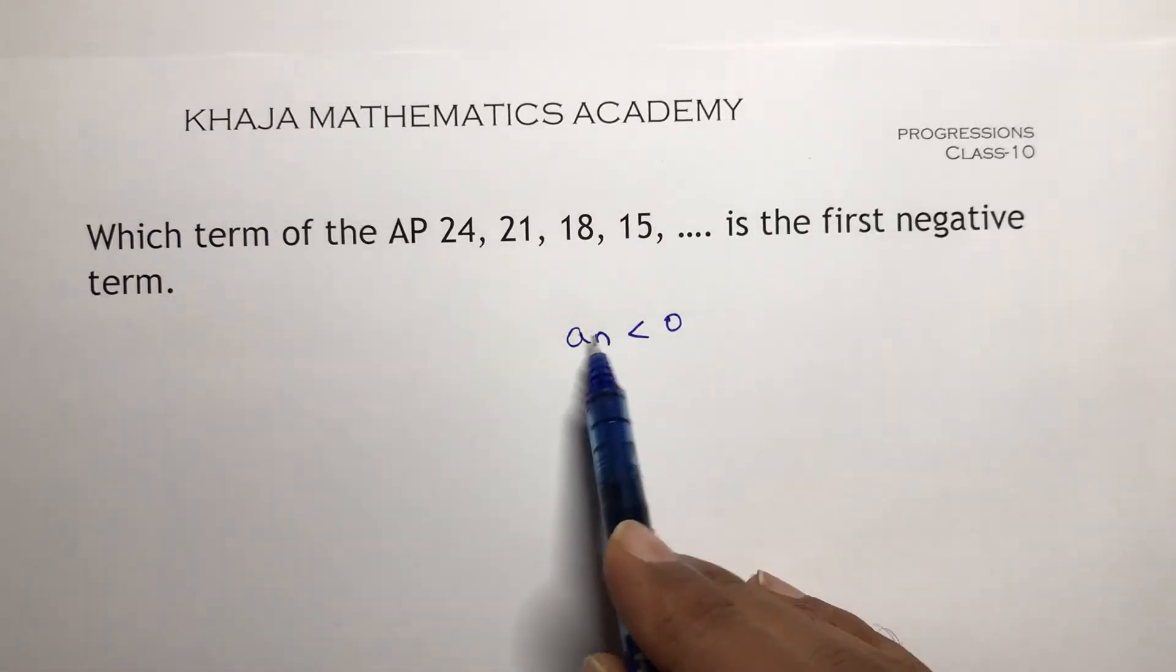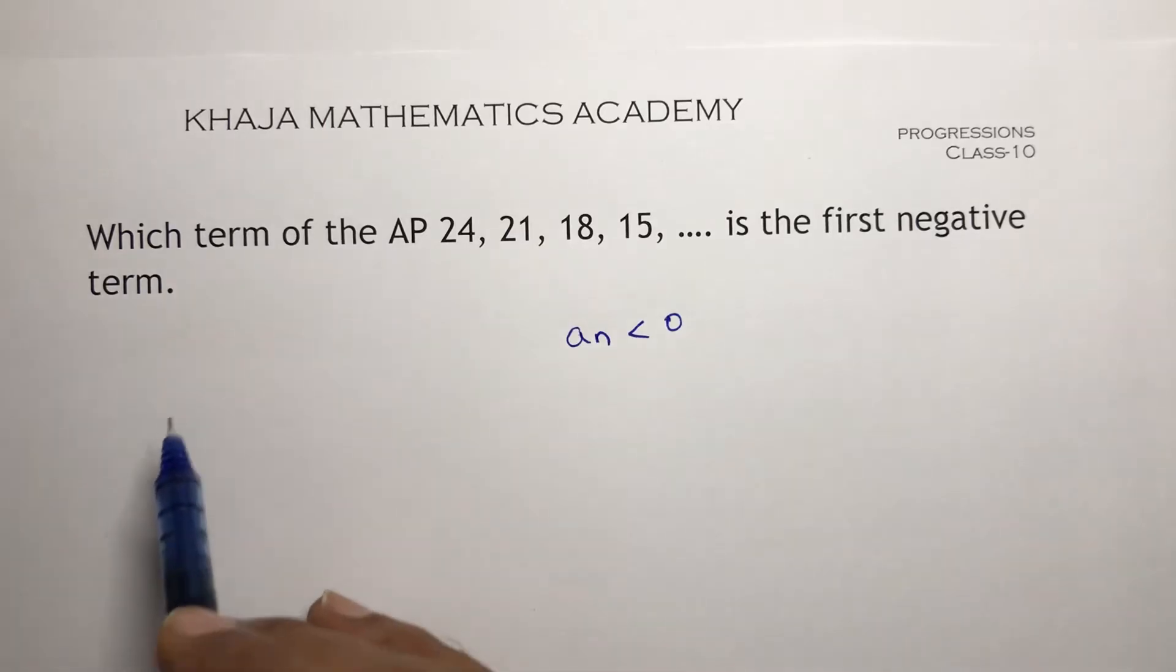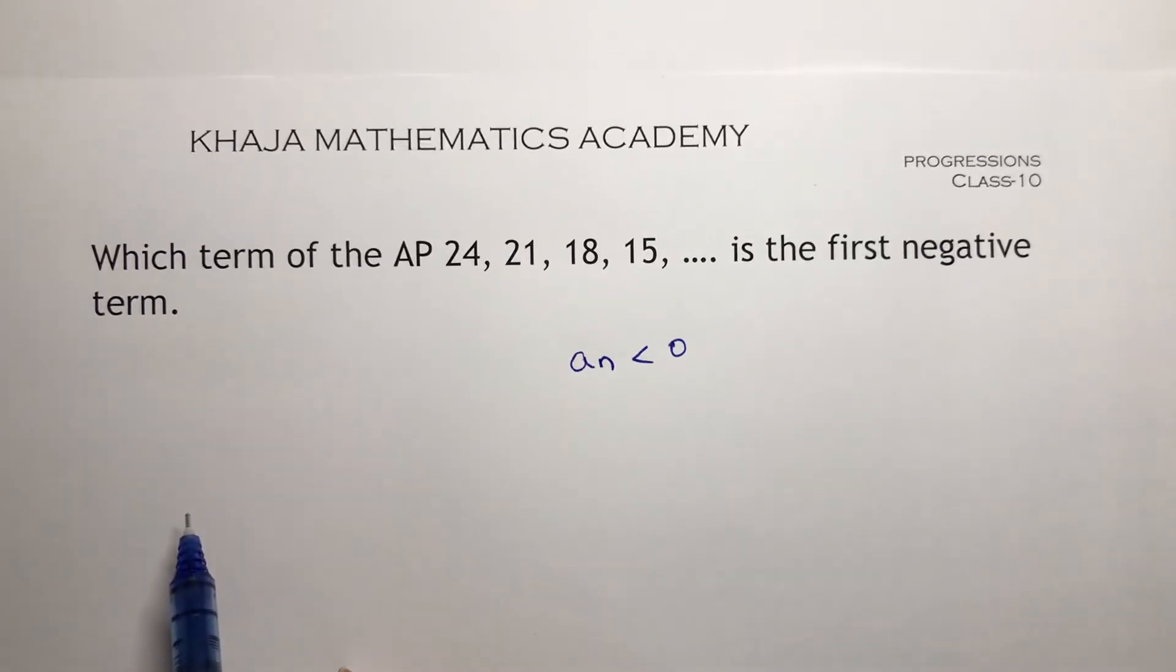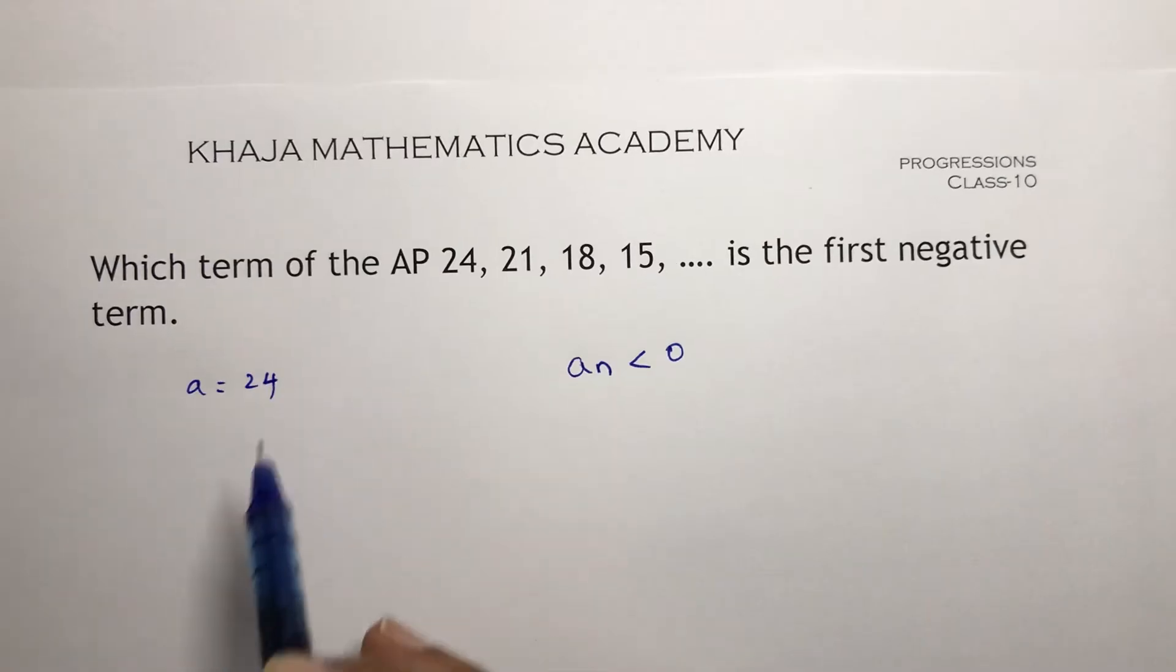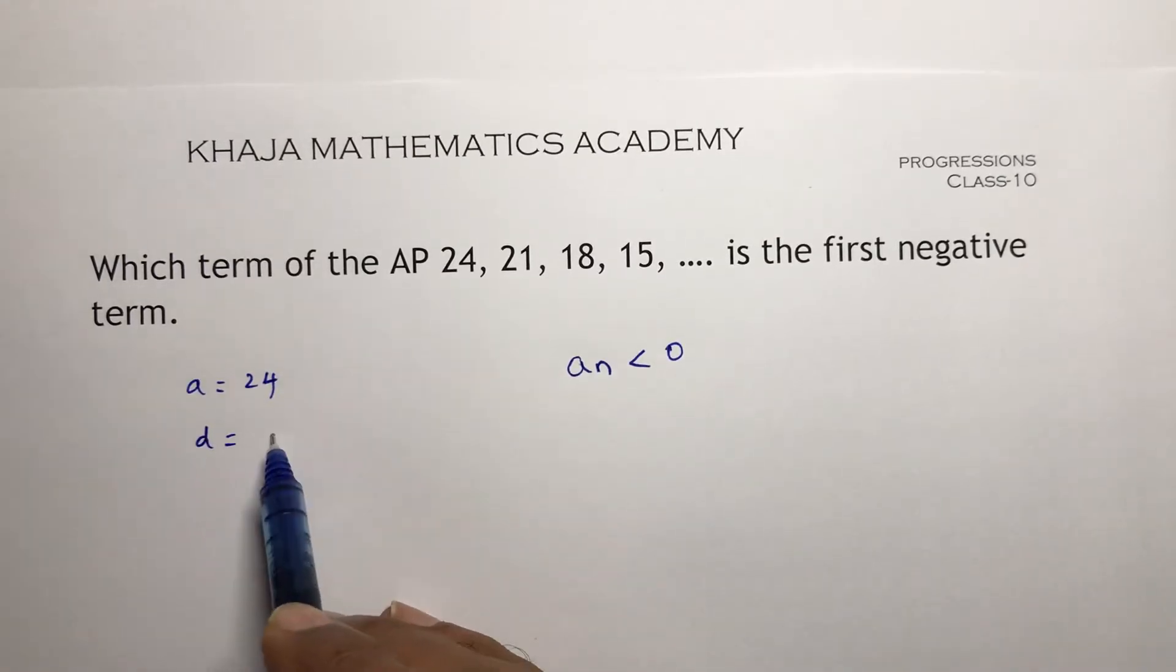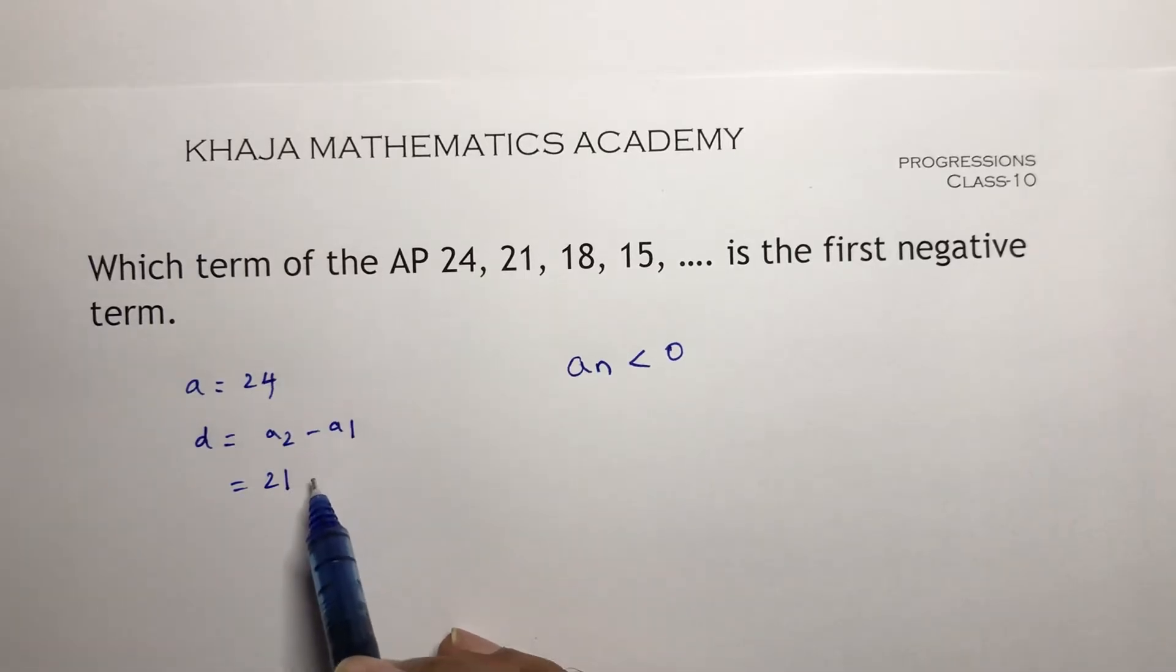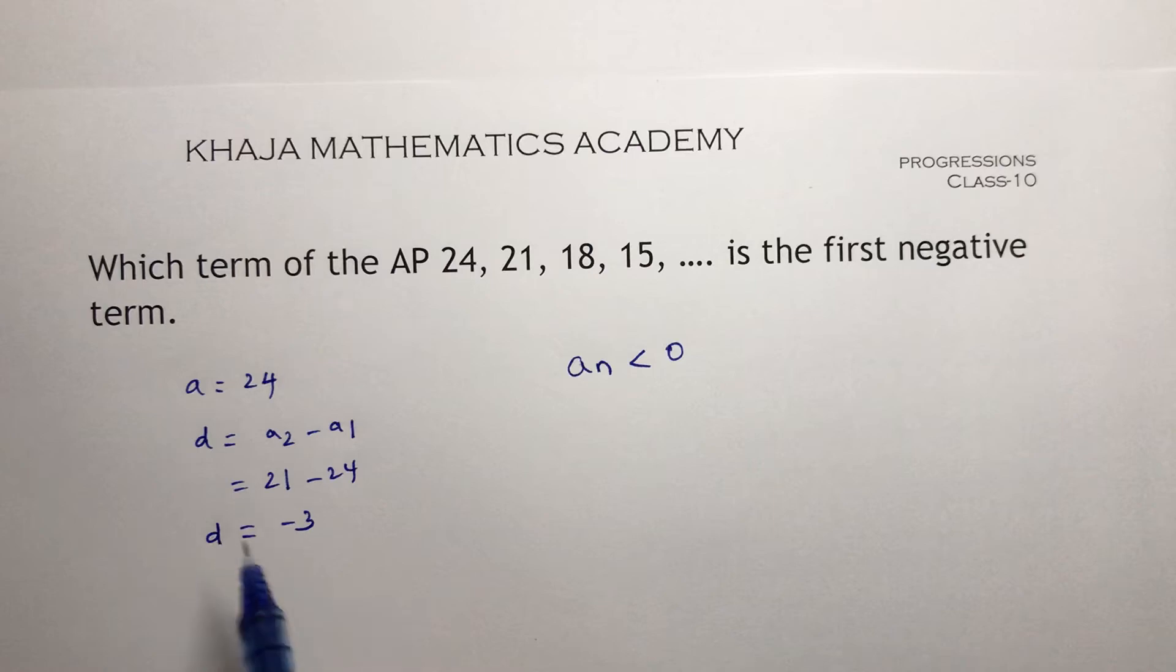Before going to start the problem, write the values of a and d. So here a is 24 and d, if we calculate a2 minus a1, that is 21 minus 24. So d is minus 3.